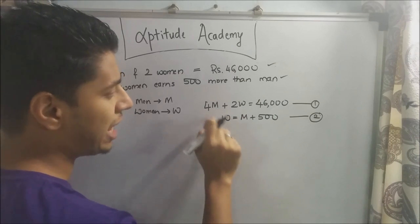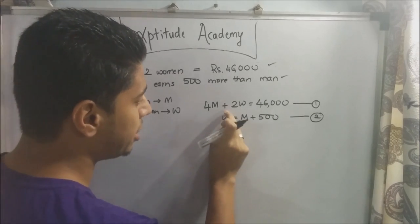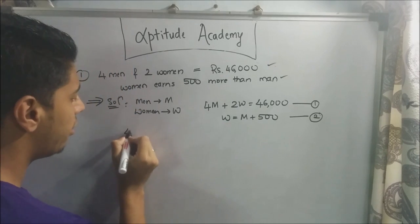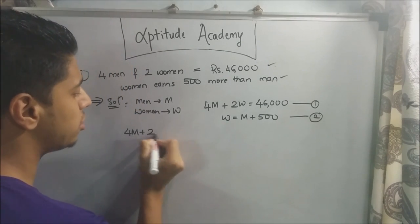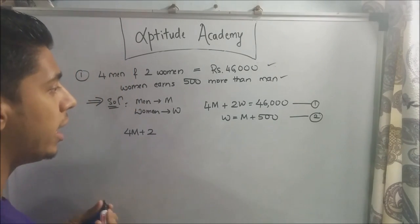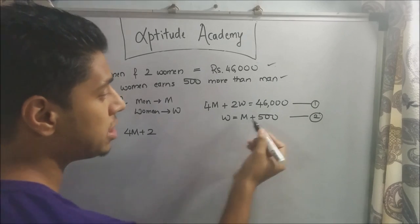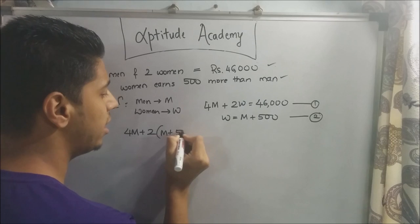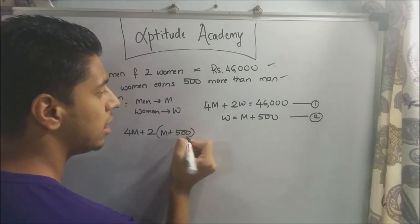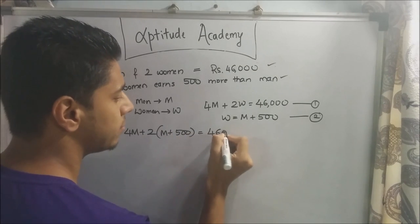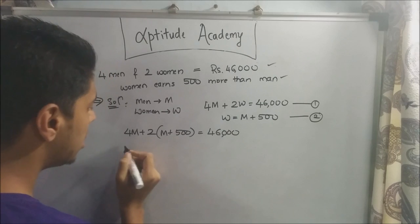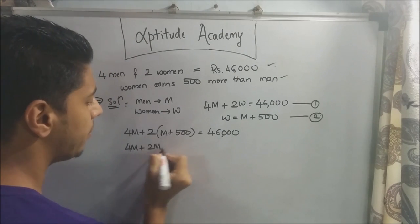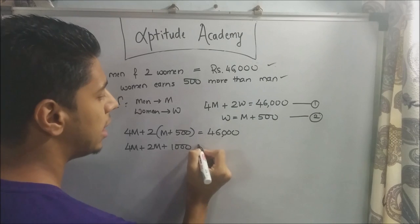Now substitute w from equation two into equation one. It will be 4m + 2 × (m + 500) = 46,000. Expanding, you get 4m + 2m + 1000 = 46,000.